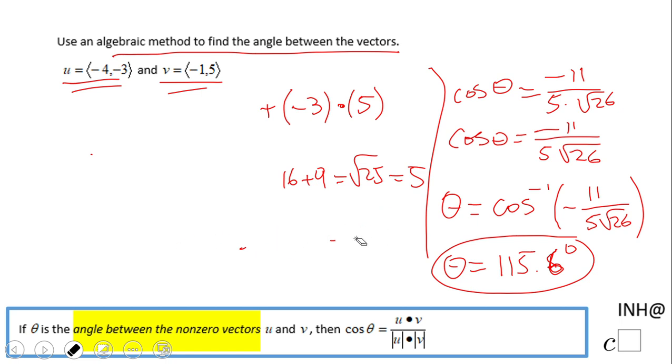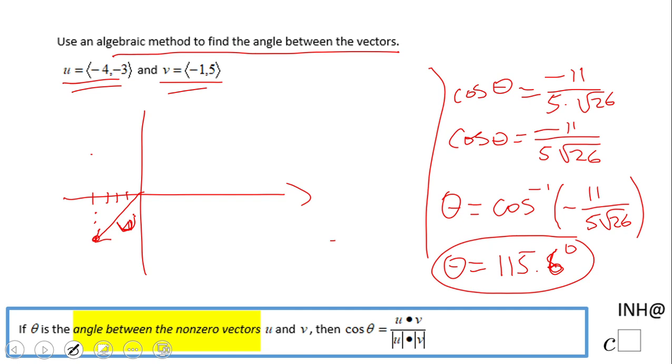The vector u is negative 4 and negative 3: 1, 2, 3, 4 and 1, 2, 3. Vector v is negative 1 and 5: 1, 2, 3, 4, 5. What we find out is this angle here is 115.6 degrees, which makes sense.